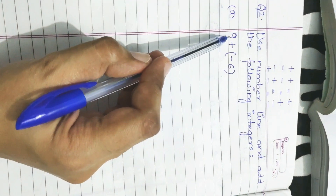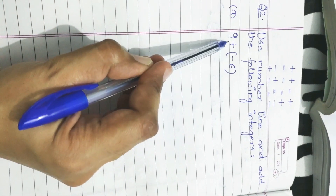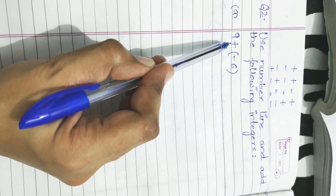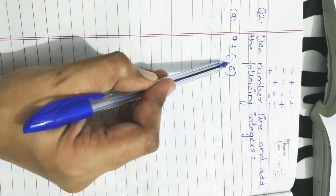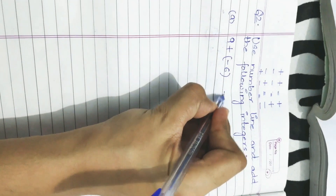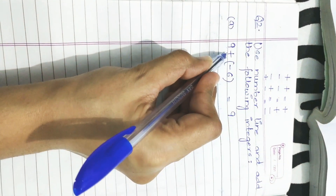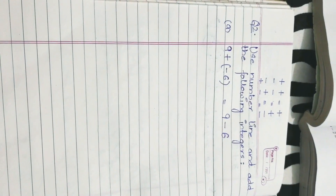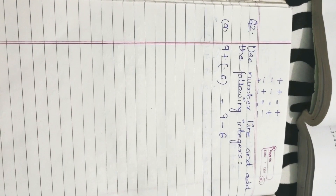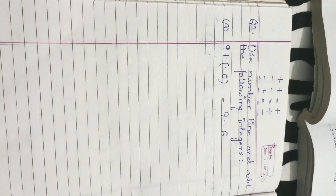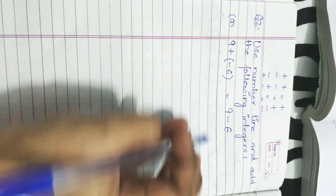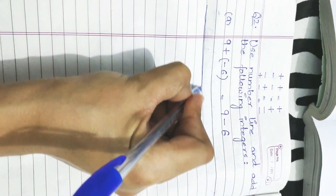In part A, it is nine plus minus six. There are two operations between nine and six. Let us resolve them: plus minus will be minus. So it can be written as the first integer nine, and the operation plus minus becomes minus, so nine plus minus six can also be written as nine minus six. Now it will be easier to solve because there is only one operation. Let us draw a number line.